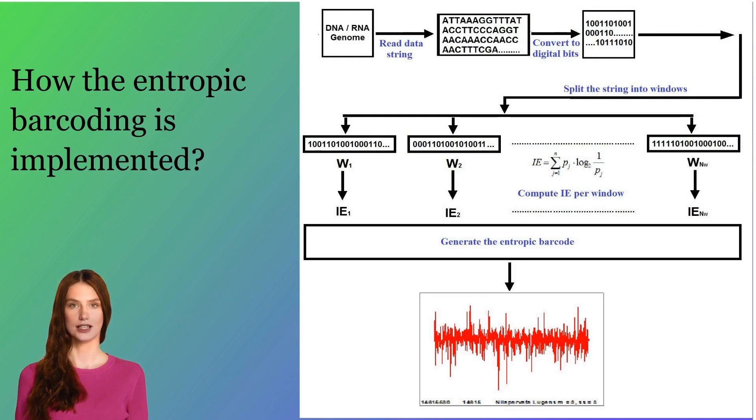Fourth, the information entropy, IE, of each window is calculated. Fifth, the Entropic Barcode of the genome is generated. Sixth, this is a graph representing the IE values per window versus window location index.